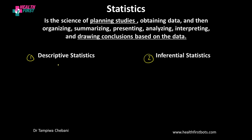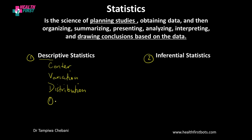With descriptive statistics, we are basically interested in describing data. We are interested in five elements: the center of the data, the variation of the data, the distribution, the presence of extreme values called outliers, and variation over time — how the data vary over time.